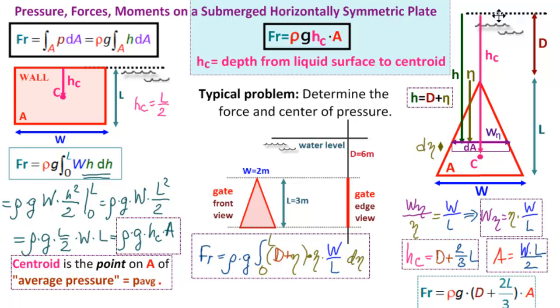So that makes HC the depth of the average pressure. So HC is the depth of the average pressure, and that makes exactly what we said. Rho GHC is the average pressure on A. Multiply by A, we get the resultant force. That's that. Now let's solve a couple of problems with the resultant force, and then we'll go on to working on the center of pressure.